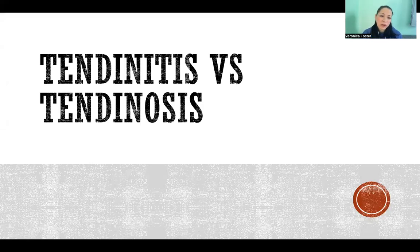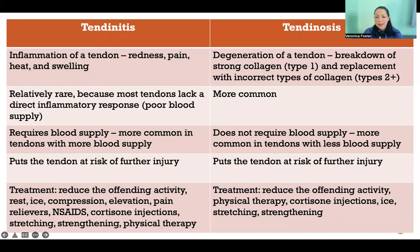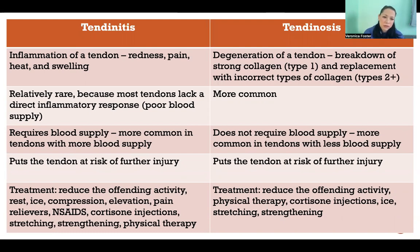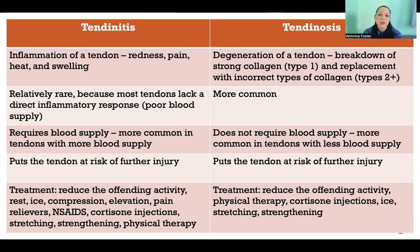Hello, in this video I'm going to tell you what tendinitis and tendinosis are and what the difference is. Anything ending in -itis refers to inflammation of, and anything ending in -osis refers to degeneration of. So tendinitis is inflammation of a tendon — that would include redness, pain, heat, or swelling — whereas tendinosis is the degeneration of a tendon, an entirely different physiological process.